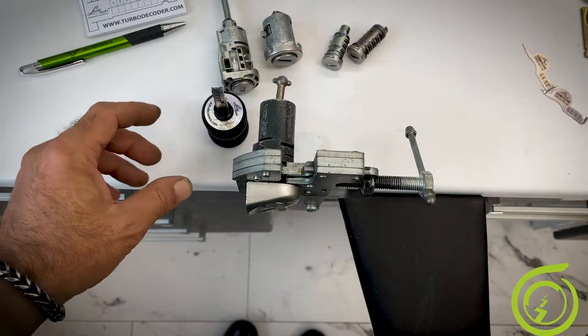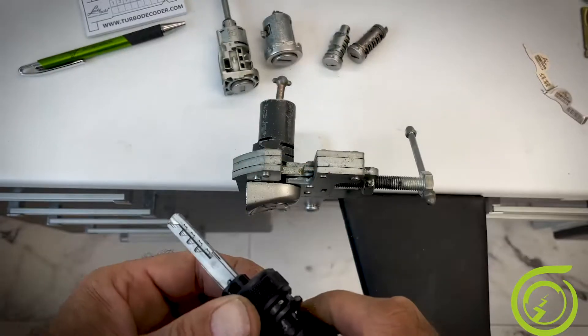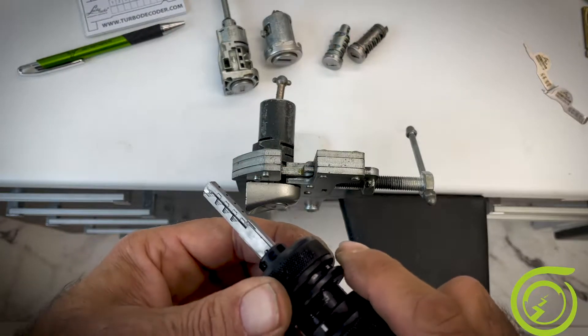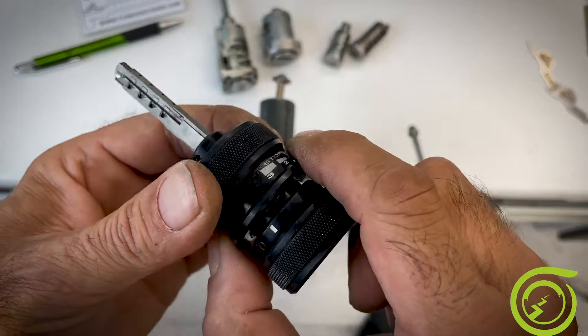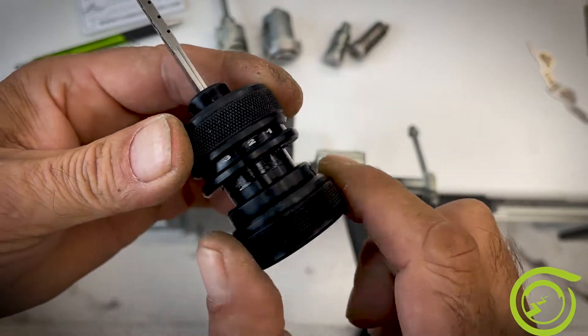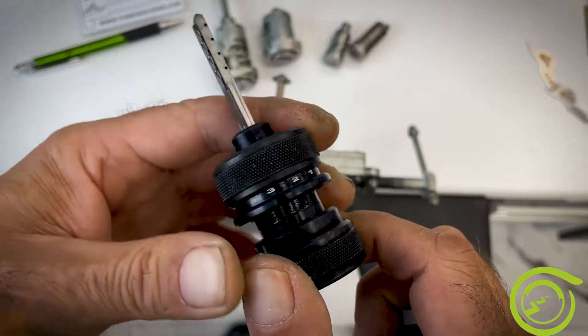The first thing you have to do when you get the tool is to reset the sliding pins. Push this ring to the front, turn the back wheel to the right.